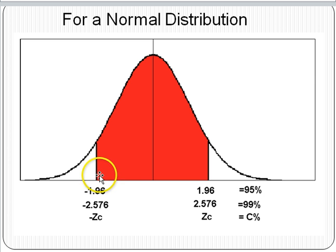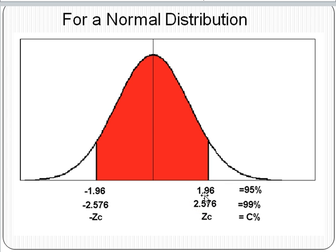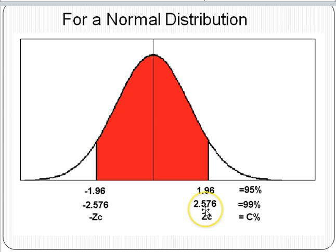With normality, we know that within negative 1.96 and 1.96 — essentially two standard deviations of the mean — 95% of the data are expected to fall. Within negative 2.576 and 2.576 — about two and a half standard deviations below and above the mean — about 99% of the data are expected to fall.